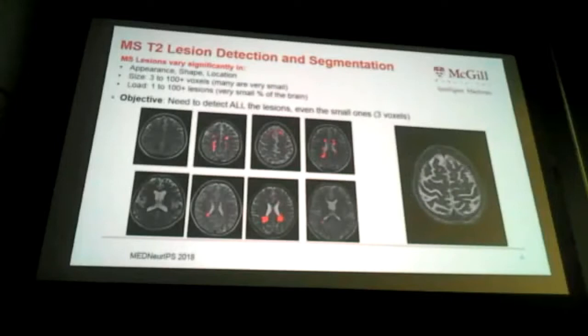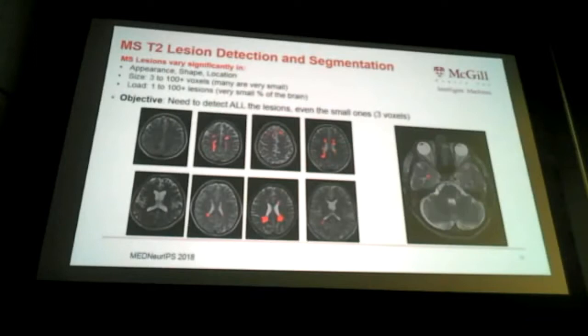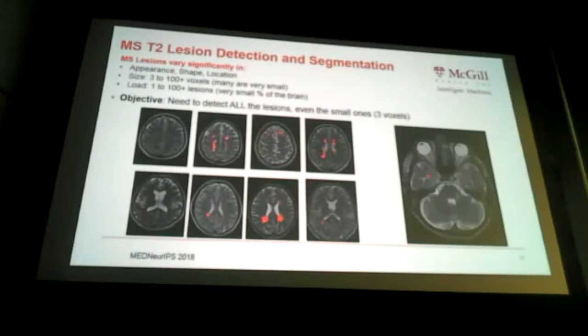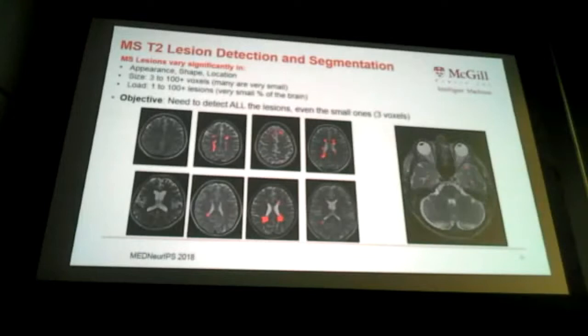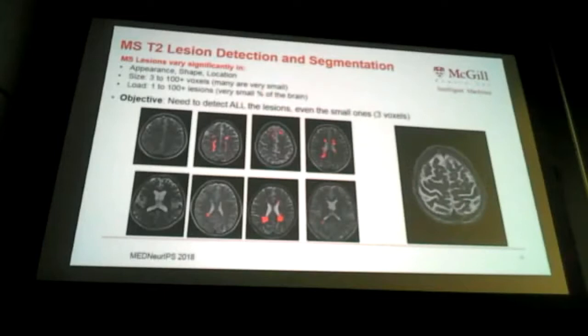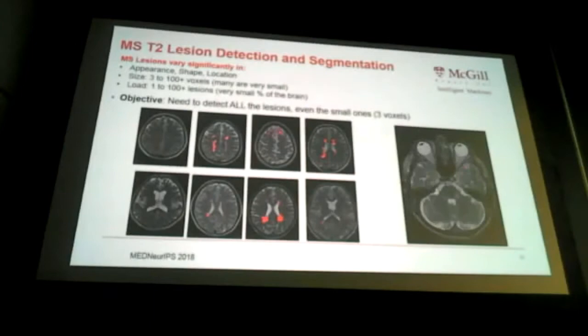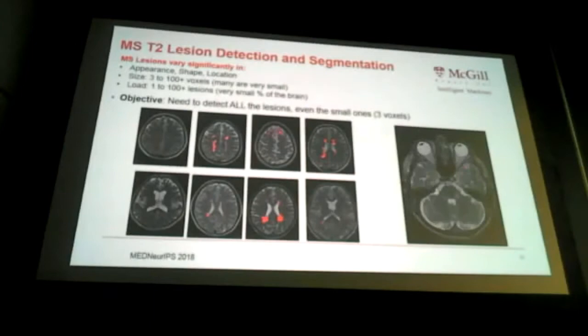MS lesions vary substantially in terms of their appearance, location, and shape. In clinical trials many are very small — as few as three voxels up to 100 voxels — and we can have anywhere from one to 100 lesions in a single brain. This illustrates the type of variability present in clinical trial data.